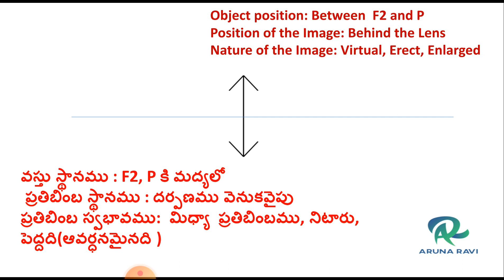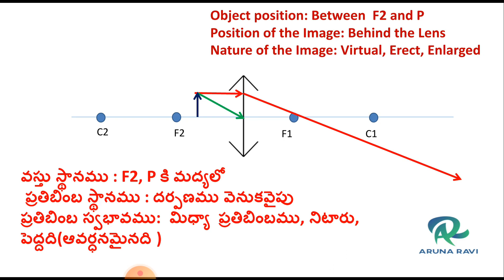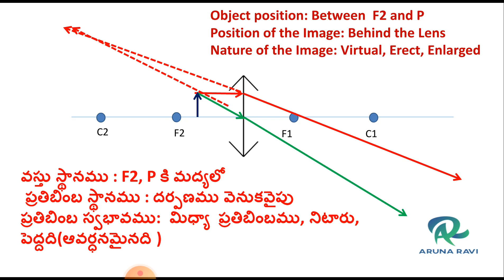This is the case in which we get a virtual image using a convex lens. If you observe, there is a convex lens with F1, C1, F2, C2, and the pole. The ray parallel to the principal axis converges at the focus, and the ray through the pole is undeviated. If you look at the refracted rays, you can see they diverge. In previous cases the rays converged. So we extend these two rays backwards. The point where they meet gives a virtual image. This is a virtual, erect, and enlarged image.